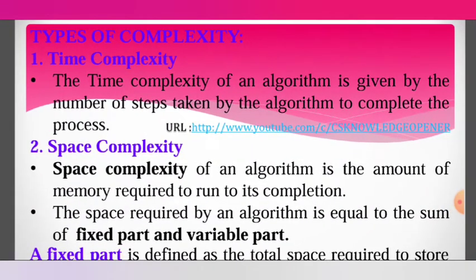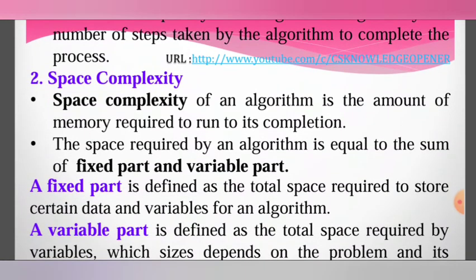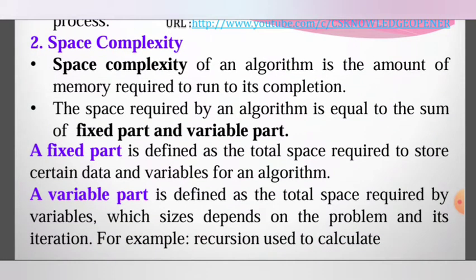First, time complexity. The time complexity of an algorithm is given by the number of steps taken by the algorithm to complete the process. Space complexity of an algorithm is the amount of memory required to run to its completion. The space required by the algorithm is equal to the sum of fixed parts and variable parts.